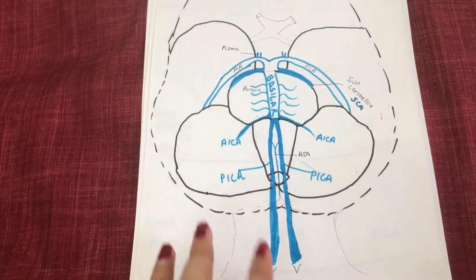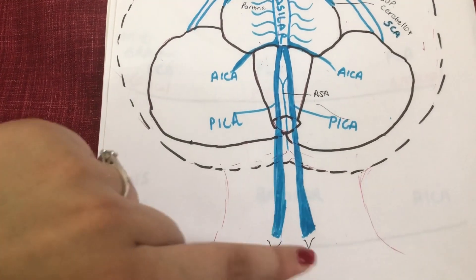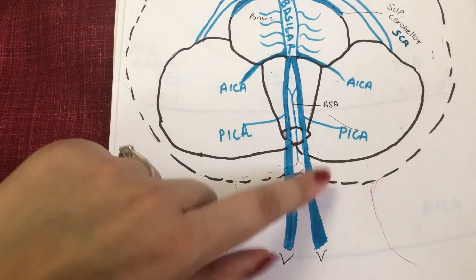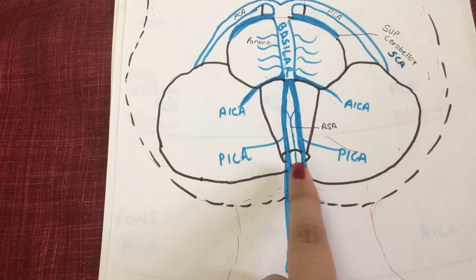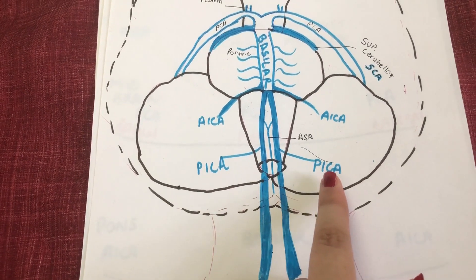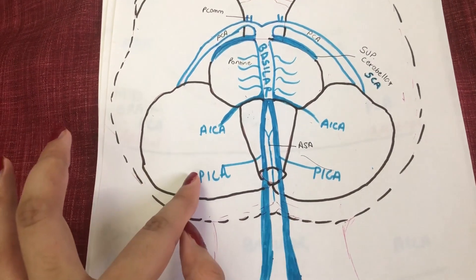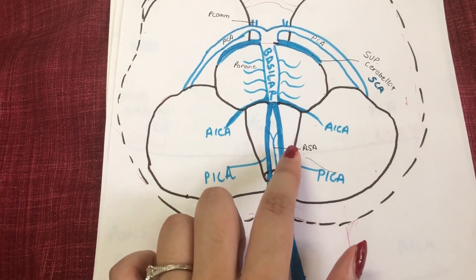You can see here that the vertebral arteries have entered the skull, and when they enter the medulla, this is where they give out their first branch, which is known as the PICA, or the posterior inferior cerebellar artery. The PICA is exiting the lateral medulla and entering the inferior part of the cerebellum.